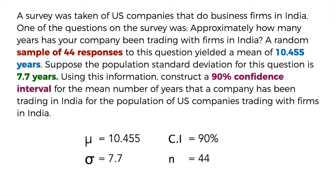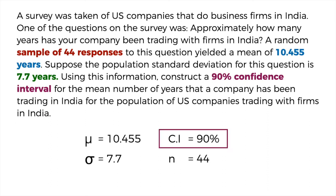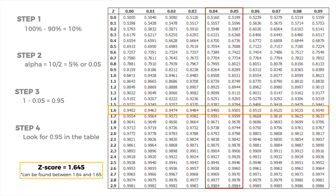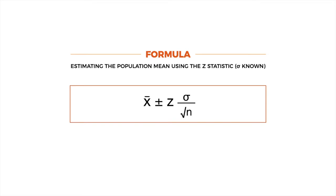The confidence interval, expressed as a percentage, corresponds to a value found on the Z-score table. For 90%, the Z value is 1.645. The formula for estimating the population mean using the Z-statistic with population standard deviation known is: X-bar plus or minus Z multiplied by the population standard deviation over the square root of N.